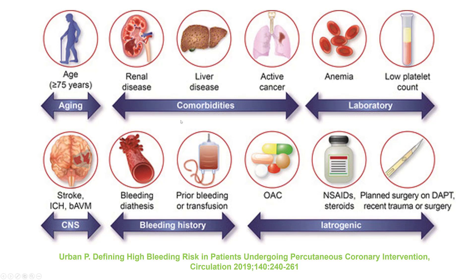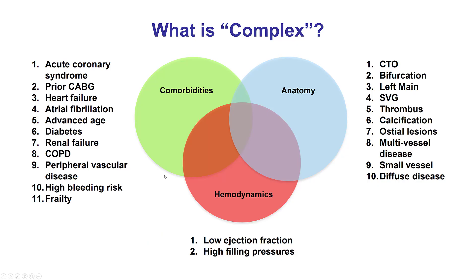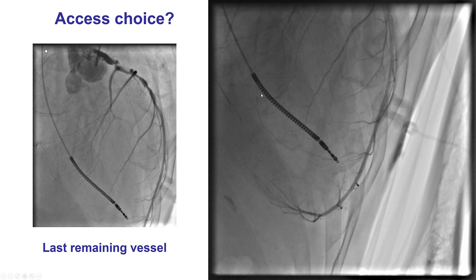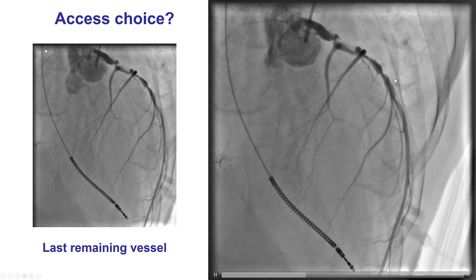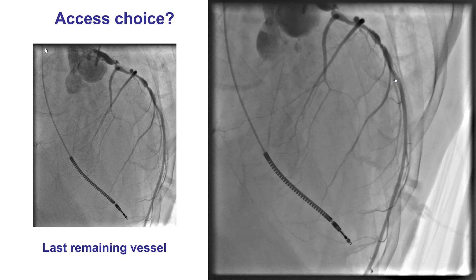The same preference for radial is true for STEMI, even though SAFARI-STEMI did not show a significant difference, because there is higher use of aggressive anticoagulation and antiplatelet strategies in such patients. The fourth step is about the complexity of the PCI, considering patient comorbidities, left ventricular systolic function and filling pressures, and the complexity of coronary artery disease. Radial can be used for complex PCI; however, for especially complex cases — such as a last remaining vessel — femoral access provides advantages in terms of higher support, use of larger guide catheters, and easier bailout or hemodynamic support if required.